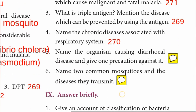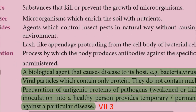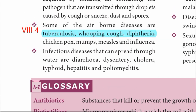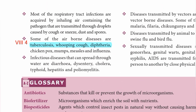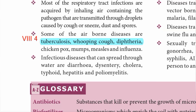Fourth one — name the chronic diseases associated with the respiratory system. The answer is: Tuberculosis, whooping cough, and Diphtheria.